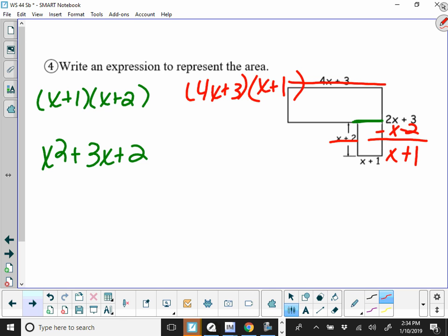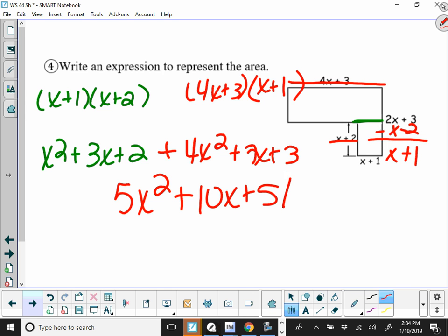So that makes that 4x squared plus 7x plus 3. And to get the total, we add those, so our answer should be 5x squared plus 10x plus 5.